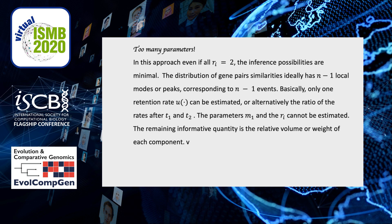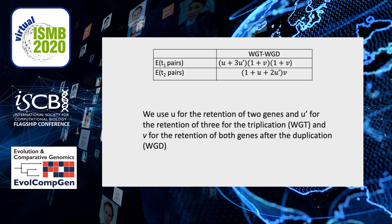Unfortunately, there are too many parameters for this type of data to explain using our branching process. For example, in this case we have two equations and three parameters. U is the probability of retaining two genes instead of one, U prime is the probability of retaining three, and V is the probability of retaining two after the second event.